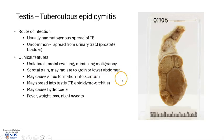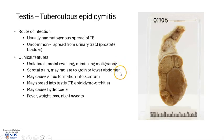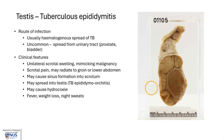Clinically, the patient will present with a unilateral scrotal swelling, and you can see here that the epididymis is quite enlarged. Hence, this can clinically mimic malignancy. There may also be some associated pain, which may radiate to the groin or the lower abdomen, and there may be, as mentioned, sinus formation into the skin of the scrotum.